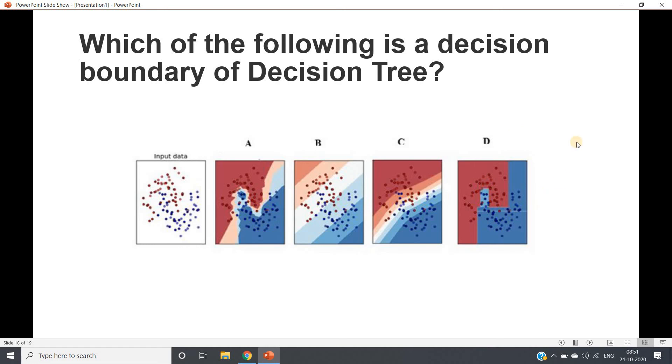The correct answer is D. Because see, A is following random decision boundary, B here is following y equals x type, not perpendicular to Y or X axis or parallel to Y or X axis. For C also same. But see for D, this particular boundary is perpendicular to X axis, this small part parallel to Y axis. This one perpendicular to X axis or parallel to Y axis, this one parallel to X axis or perpendicular to Y axis.